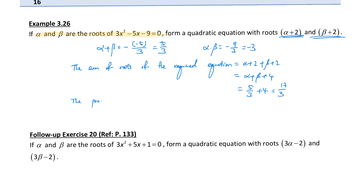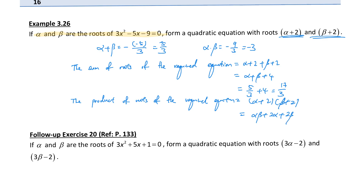What is the product of roots of the required equation? The product of roots is (alpha plus 2)(beta plus 2). Expanding this gives: alpha times beta plus 2 alpha plus 2 beta plus 4. Taking out the 2 from the middle terms, this equals alpha times beta plus 2(alpha plus beta) plus 4, which is equal to negative 3 plus 10 over 3 plus 4, giving us 13 over 3.